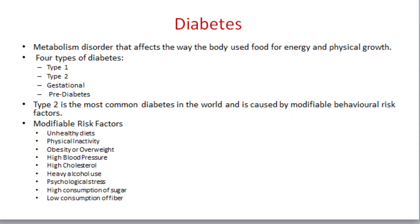The next lifestyle disease is diabetes. Diabetes is a metabolic disorder that affects the way the body uses food for energy. It is of four types: type 1, type 2, gestational, and pre-diabetes. Type 2 is the most common diabetes in the world and is caused by modifiable behavioural risk factors. This disease is characterized by elevated blood glucose levels, also commonly known as high blood sugar.